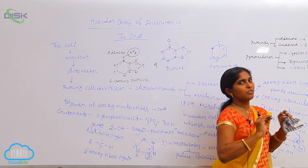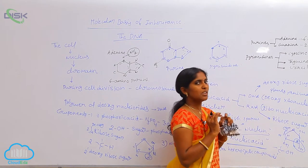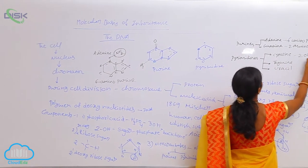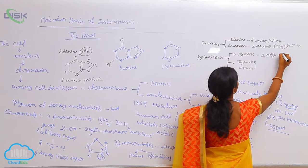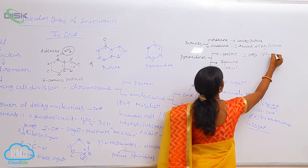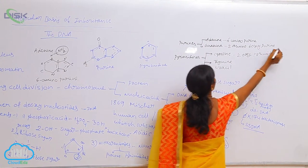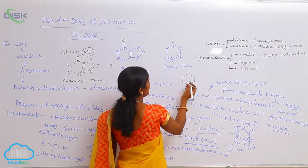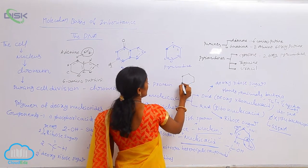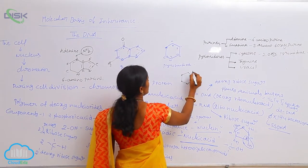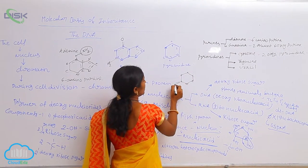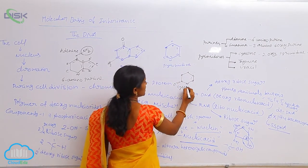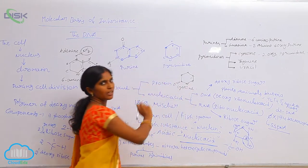How is cytosine differentiated from the basic skeleton? It is 2-oxypyrimidine — two-oxypyrimidine means at the second position of the pyrimidine, an oxygen molecule is present. That is indicated as cytosine.